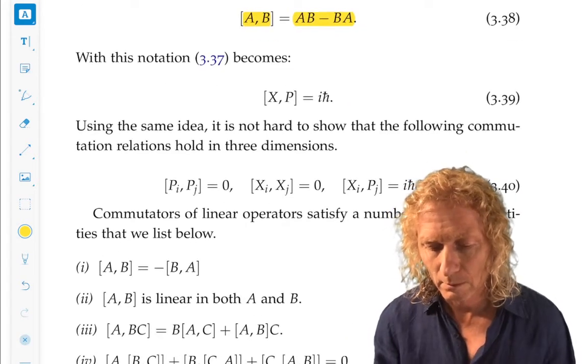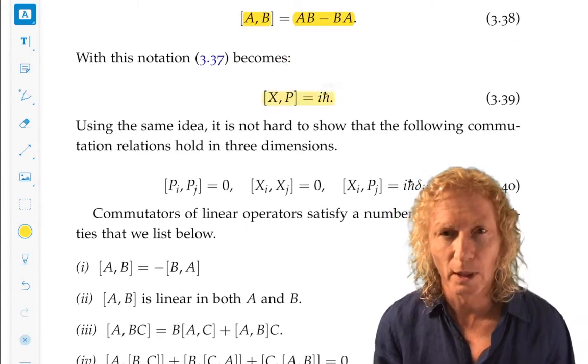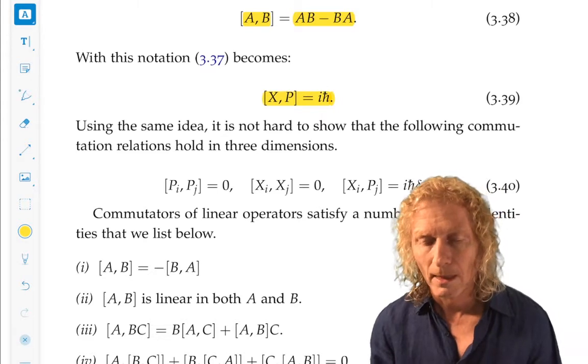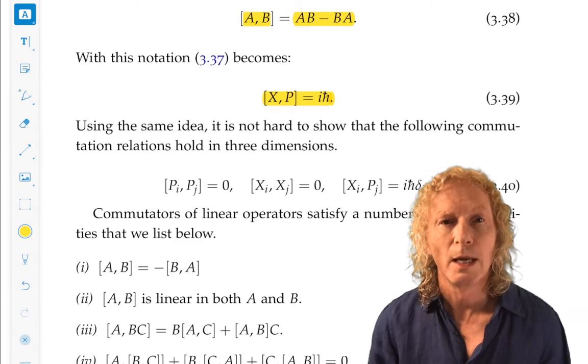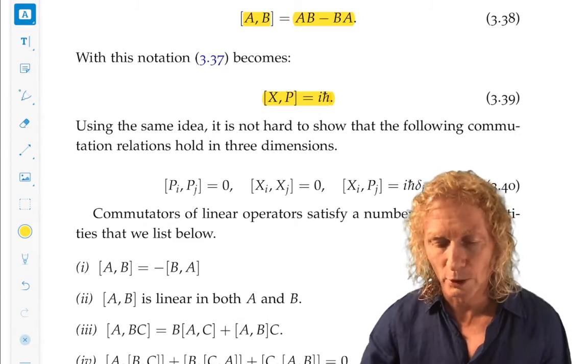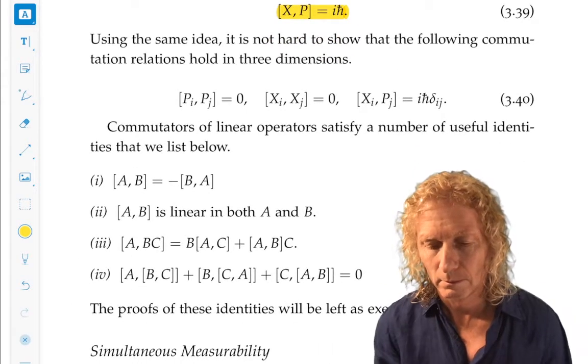We see from the previous calculation that X and P do not commute, and we have this famous commutation relation, XP equals i h bar.